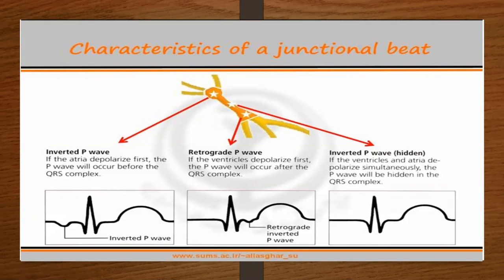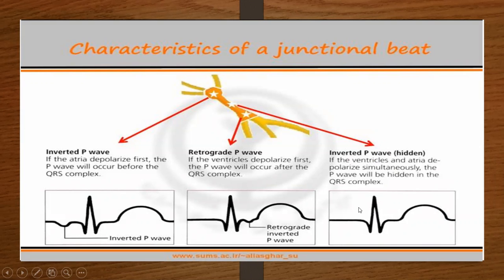Characteristics of a junctional beat: you'll have an inverted P wave if the atria is depolarized first. If the ventricle is depolarized first, then the P wave is going to be after the QRS. And if they depolarize simultaneously, then the P wave is going to be hidden within the QRS.